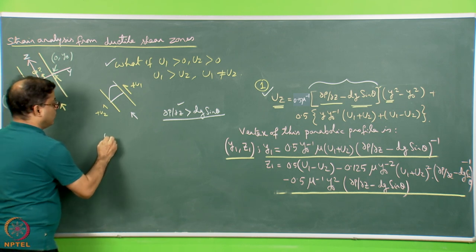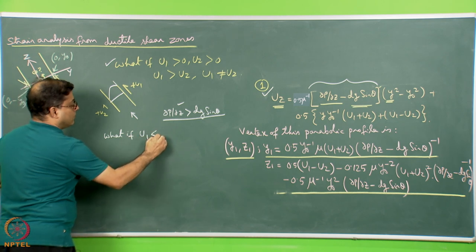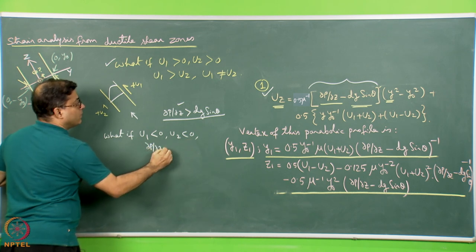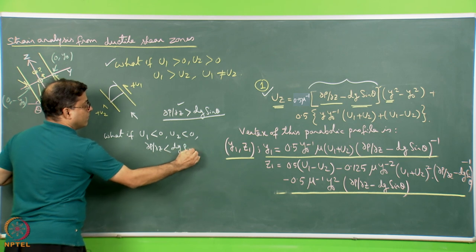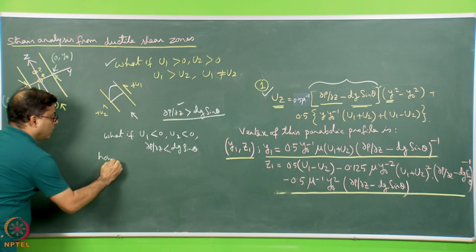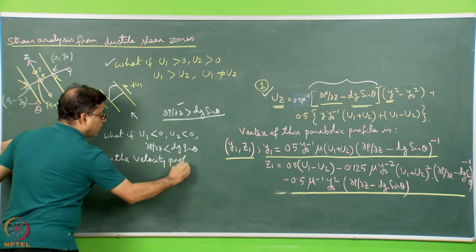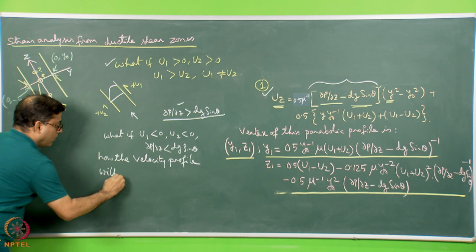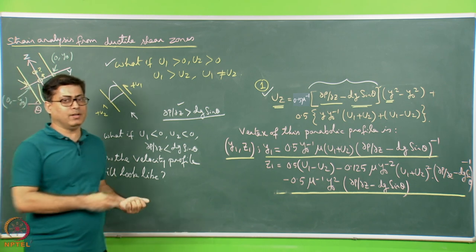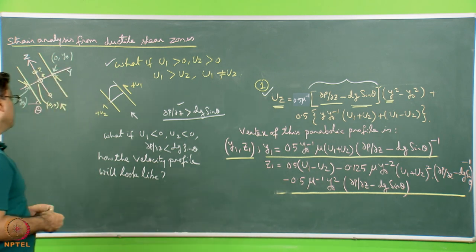Now you can work out what happens if u1 is less than 0, u2 is less than 0, and del P del z is less than ρg sin θ, and how the velocity profile will look. For beginners it may take some time, but as you practice it becomes very easy — very quickly you can determine what is going to happen.